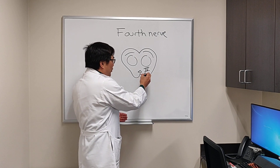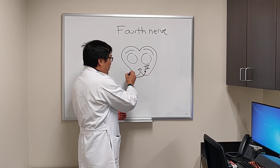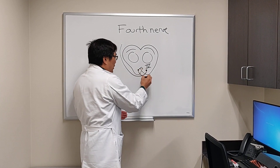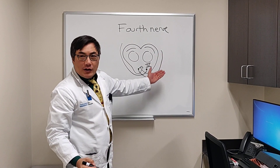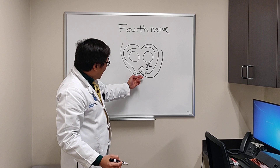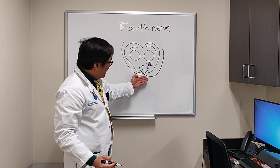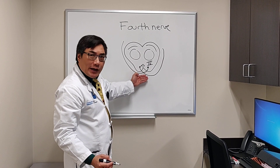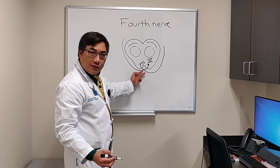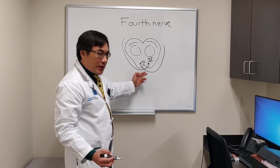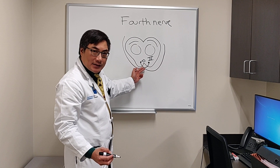One of the important things you need to know right away is that the fourth nerve exits dorsally before traveling ventrally, and it is crossed. That means lesions in the dorsal midbrain, especially trauma, can cause a bilateral fourth nerve palsy because it's both crossed and exits dorsally.